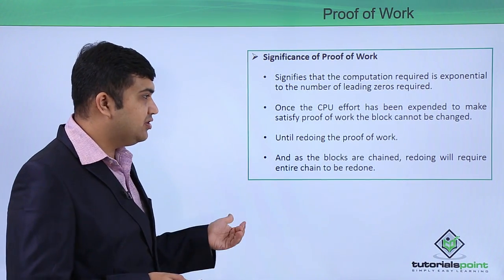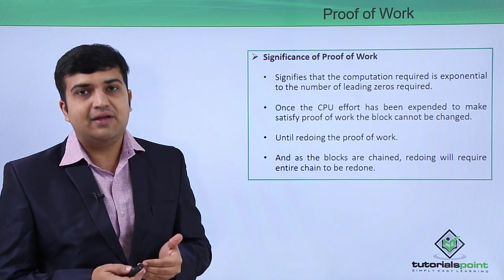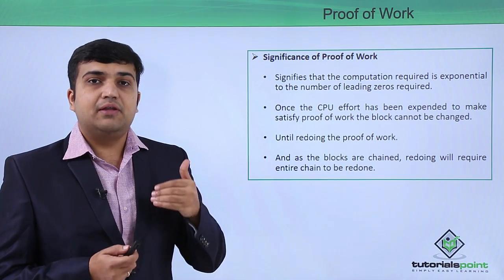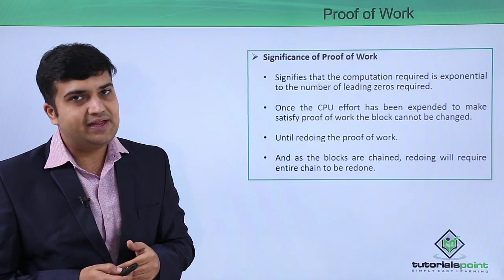In case of blockchain, the blocks are chained with each other and the hash value of the current block is dependent on the hash value of the previous block. The proof of work has to be redone again for all the blocks in the entire blockchain.